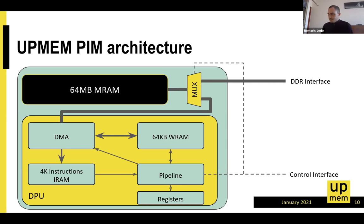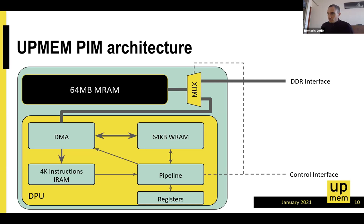There is a multiplexer in front of the MRAM because of DDR4 — either the host application or the DPU can access the MRAM at a given point, but not both simultaneously. This is a significant programming constraint, though the API mostly handles it. The pipeline has 24 interleaved threads, executing one instruction per cycle at best.